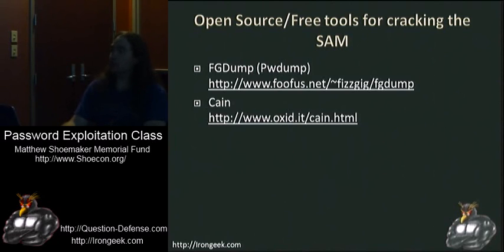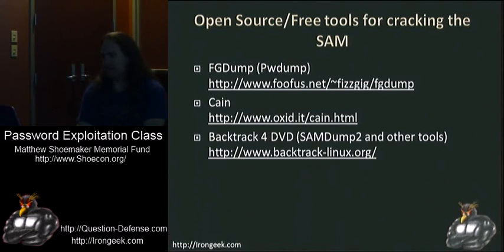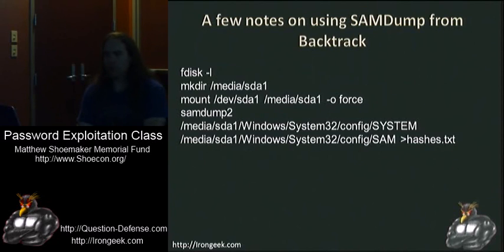Cain is really good for dumping SAM files. There's also SAMdump2, which you saw earlier — we pointed it to both the SAM and the system file. We could take that output and load it into different tools. That output is in PWDump format. FGDump is like a current version of that from the Fufus group. Backtrack for DVD has the SAMdump tool on it, so you can use that as well.